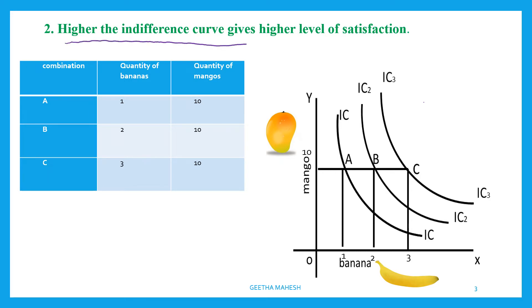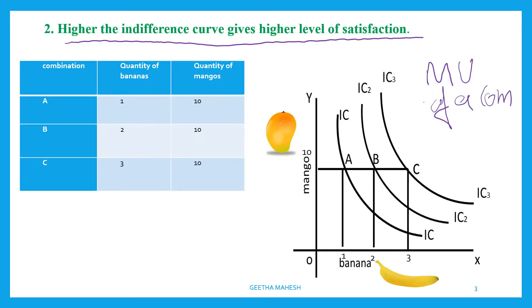The second feature of indifference curves is that a higher indifference curve gives a higher level of satisfaction. As long as the marginal utility of a good remains positive, an individual will always prefer more of that good, as more of the commodity will increase the level of satisfaction.